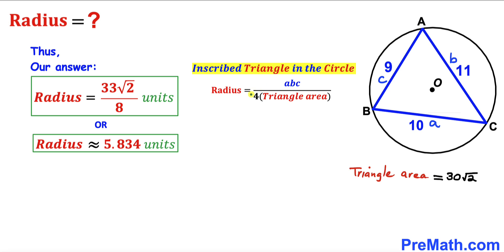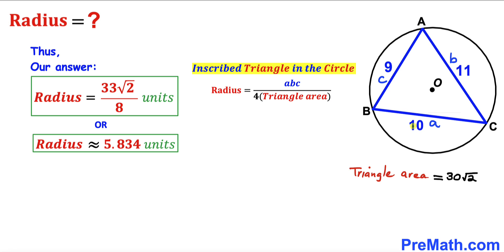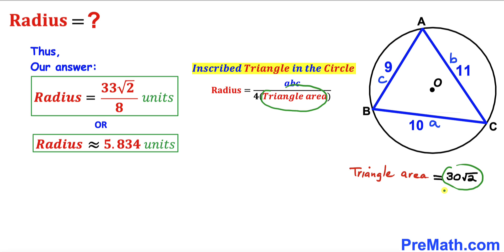So we can directly find the radius of this circle using the formula, where a equals 10, b equals 11, and c equals 9 in the numerator, and at the denominator the area of this triangle is 30 times the square root of 2, which we found using Heron's formula. Thanks for watching and please don't forget to subscribe to my channel for more exciting videos. Bye!